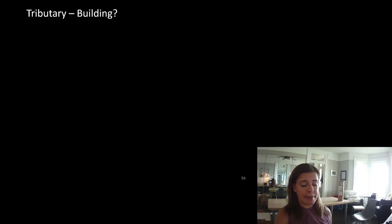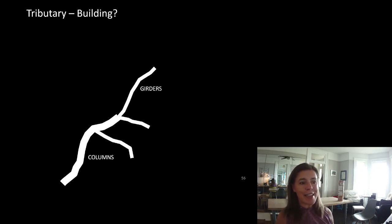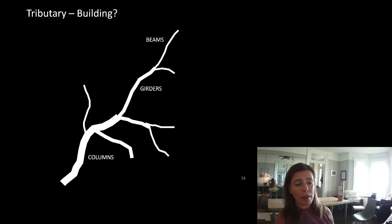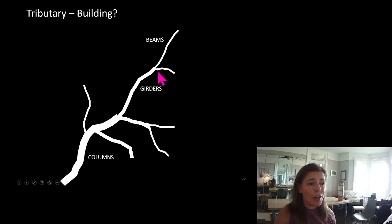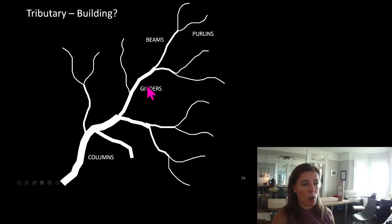It's the same process with a building. Think of the river as a column and the streams as girders. A girder is a beam — don't worry about it. We also have beams and purlins. A purlin is also a beam, just one that is doing very little work. A purlin is not doing much work; a beam is doing a medium amount of work; a girder is doing a lot of work; and columns are doing the most work.